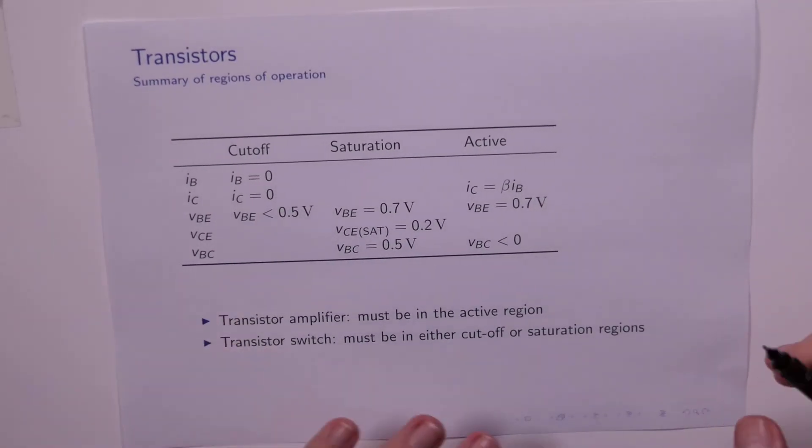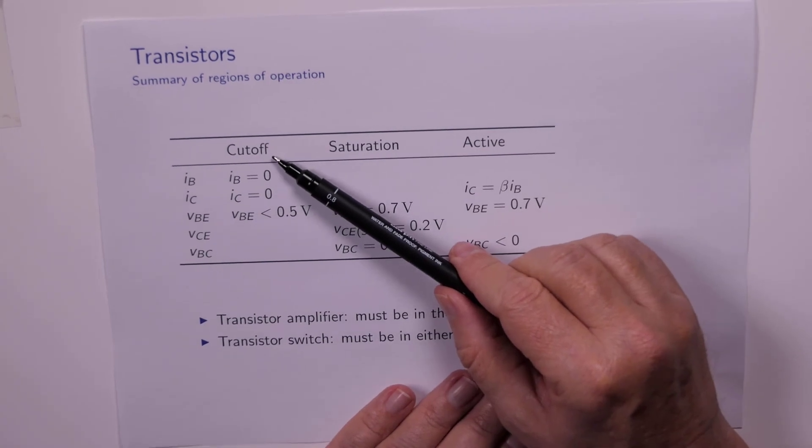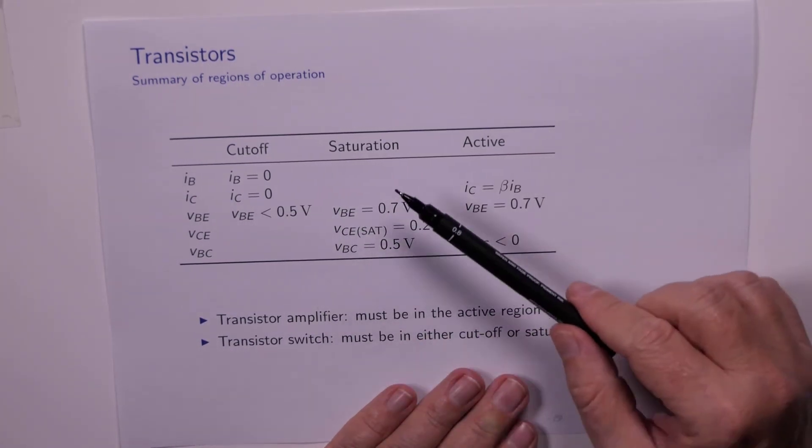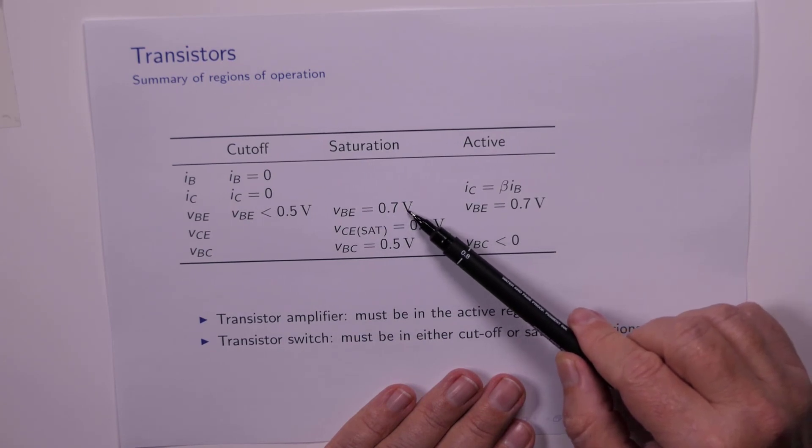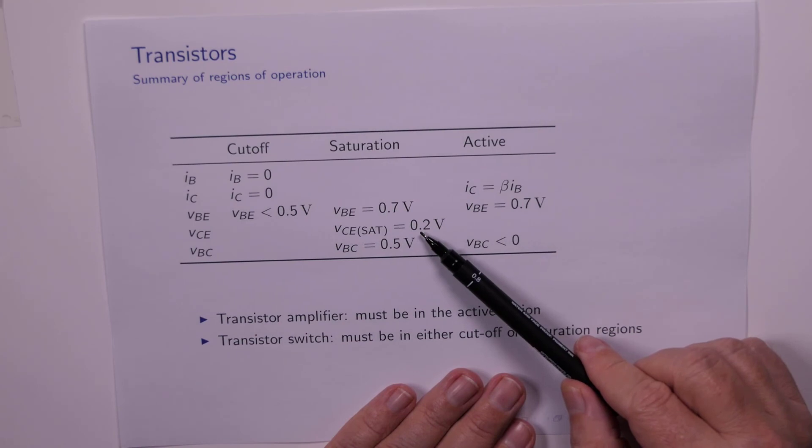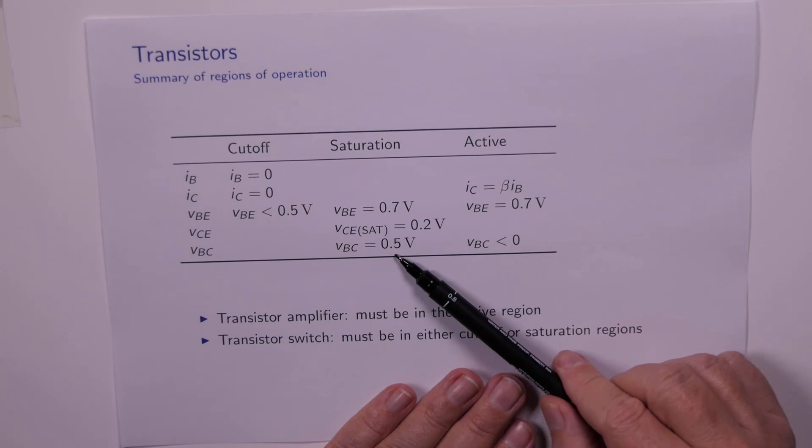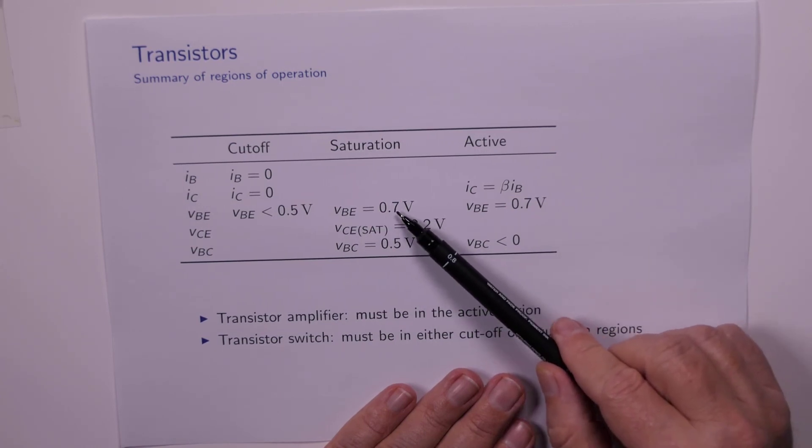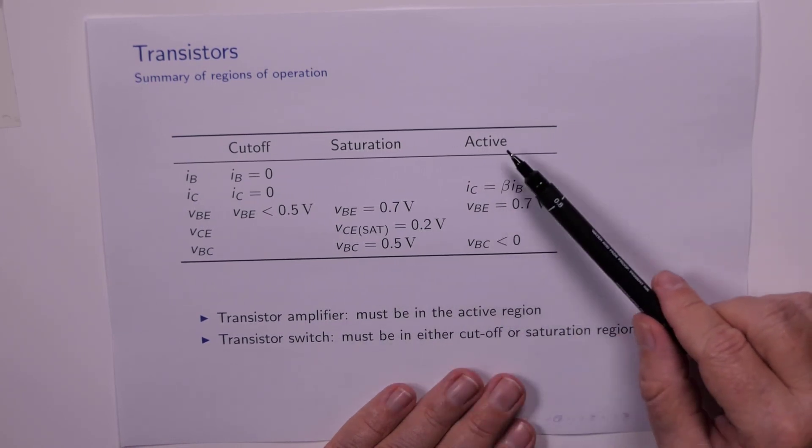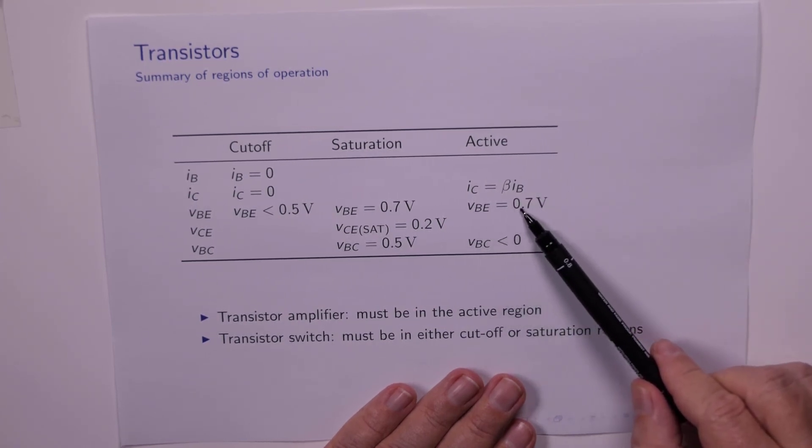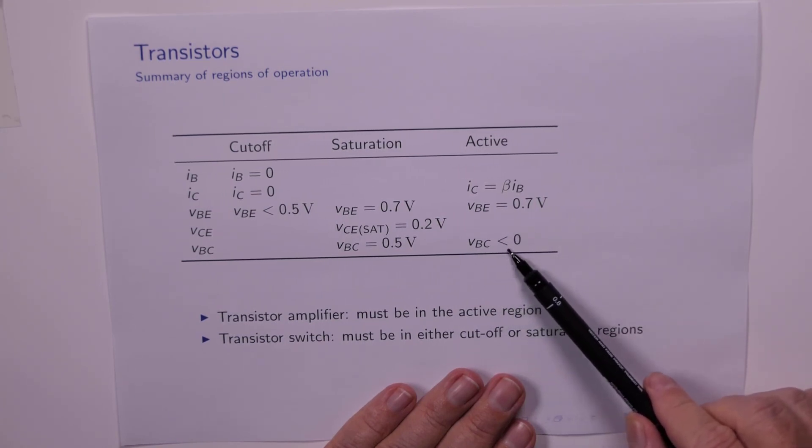So we can summarize that behavior in a table. When the transistor is in cutoff, VBE is less than half a volt. The collector current and the base current are both zero. When we are in saturation, the transistor is conducting, so VBE is 0.7 of a volt, but the collector emitter voltage cannot drop below some small but non-zero voltage, which for us this year is going to be 0.2 of a volt. And it turns out that VBC is about 0.5, and if you have a look at it, that's just 0.7 minus 0.2. And finally, in the active region, the collector current is some fixed factor times IB. The device is conducting, so VBE is 0.7, and the base collector voltage has to be negative.